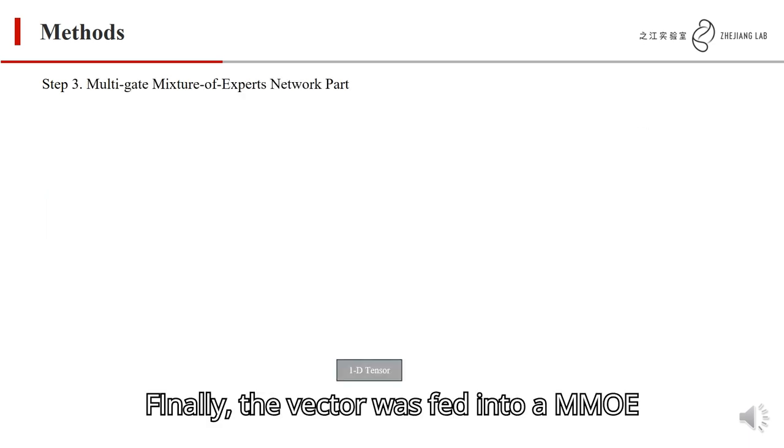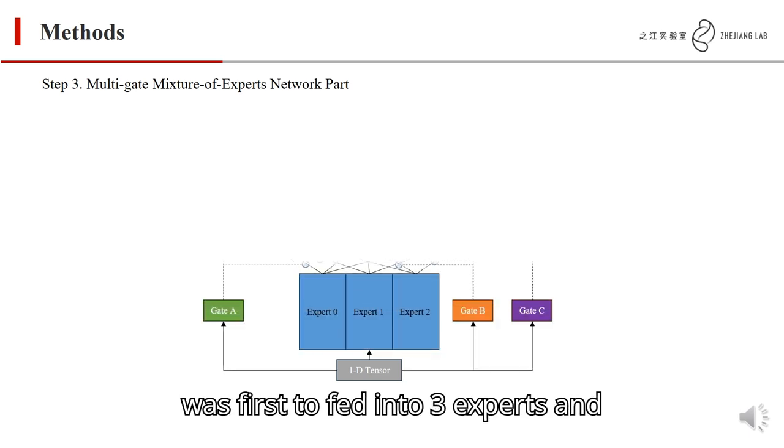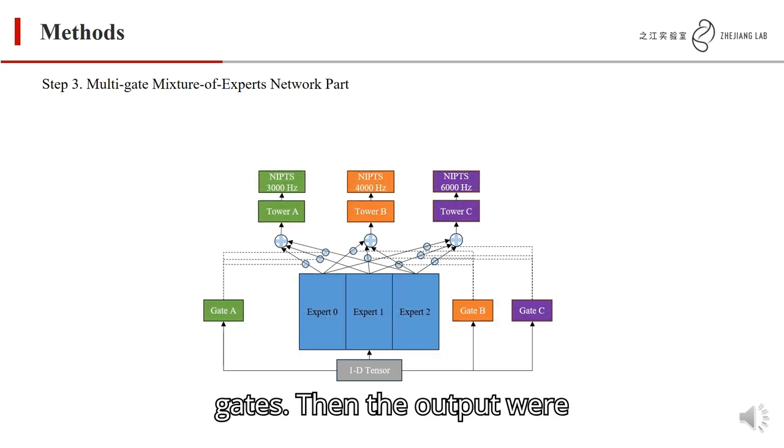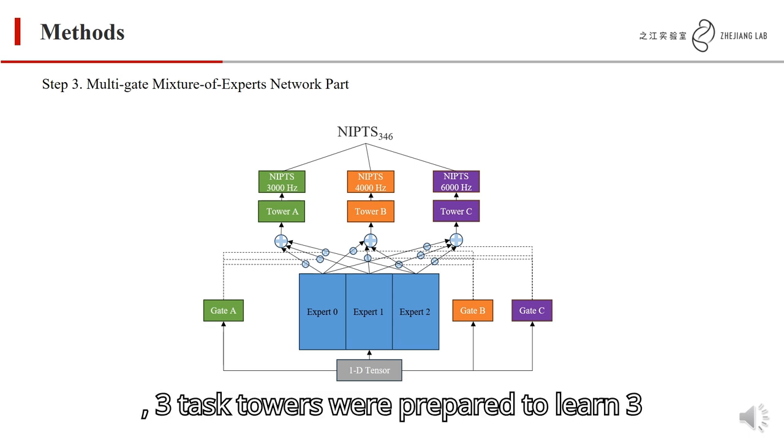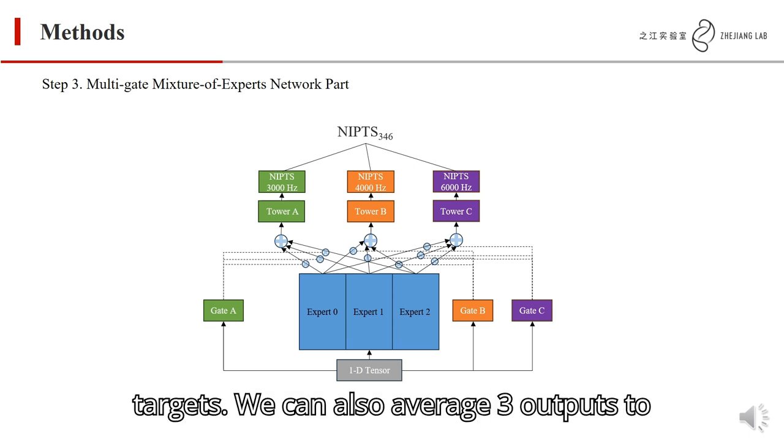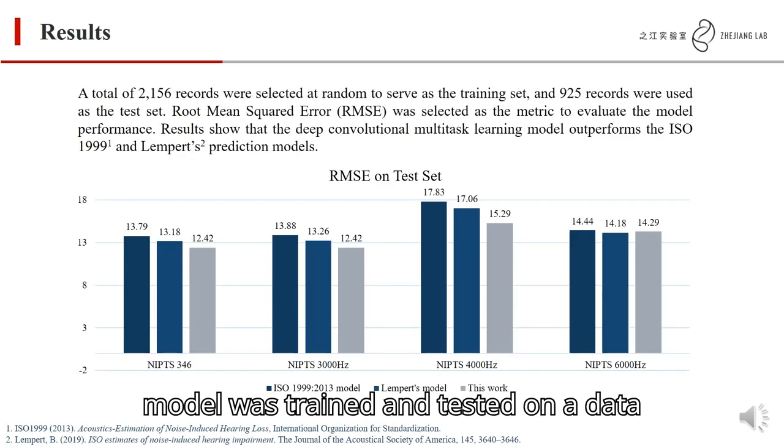Finally, the vector was fed into an MMoE network. In this part, the vector was first fed into three expert gates. Then, the outputs were multiplied and summed. Finally, three task towers were prepared to learn three targets. We can also average the three outputs to get a mean value of NIPTS across different frequency domains.